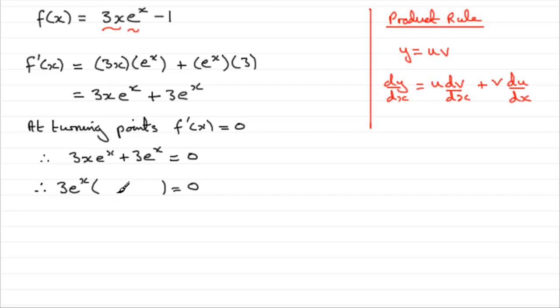What goes in here? Well, we would need an x to give us 3x e to the power x, that term. And we would need plus 1 so that we get 3 e to the x times 1, which is 3 e to the x.